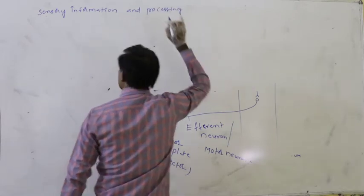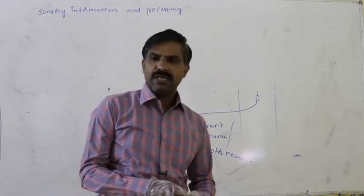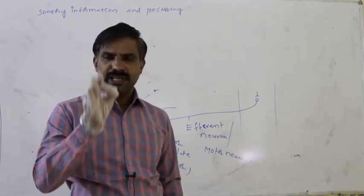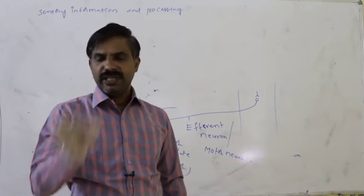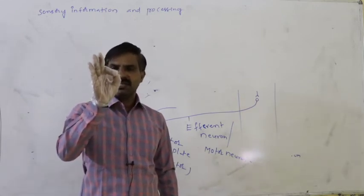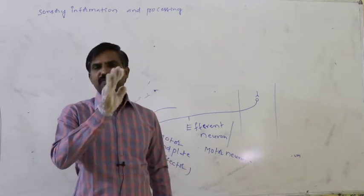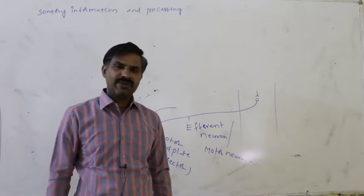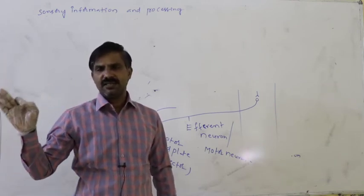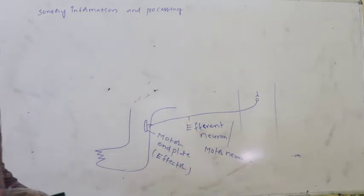Next topic: Sensory Information and Processing. Receptors present in our body continuously receive information from the external environment. That information is conducted to the sensory neuron, through which it is conducted to the central nervous system — either to the brain or to the spinal cord. According to this sensory information, motor information is generated in the CNS, conducted to the motor neuron, and finally reaches the effectors — evoking a response in the person. That is sensory information and processing.